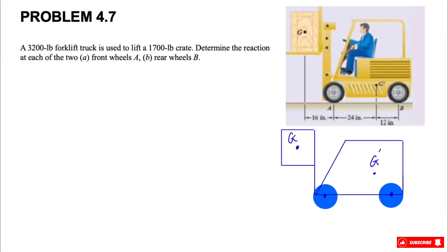Okay, welcome back guys. We have a question from chapter 4 of Beer and Johnson textbook. We have a 3200-pound forklift truck that is used to lift a 1700-pound crate. We need to determine the reaction in each of the two front wheels at point A.